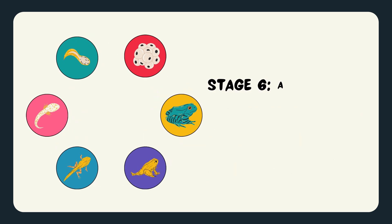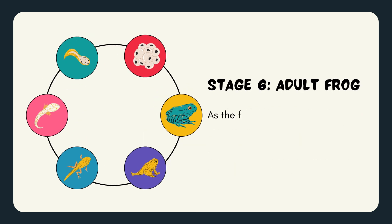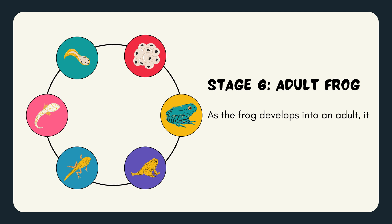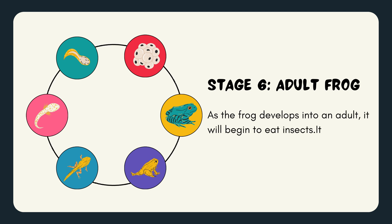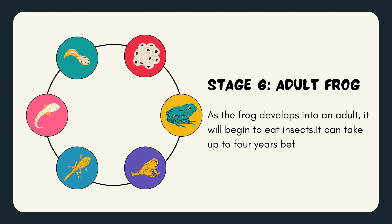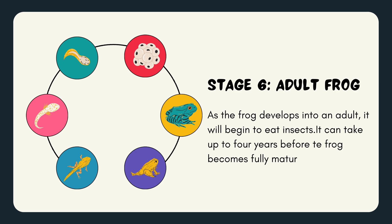Stage 6: Adult Frog. As the frog develops into an adult, it will begin to eat insects. It can take up to four years before the frog becomes fully mature.